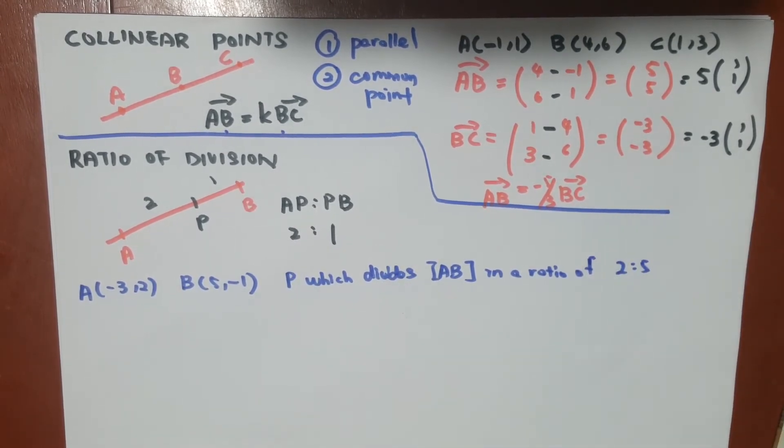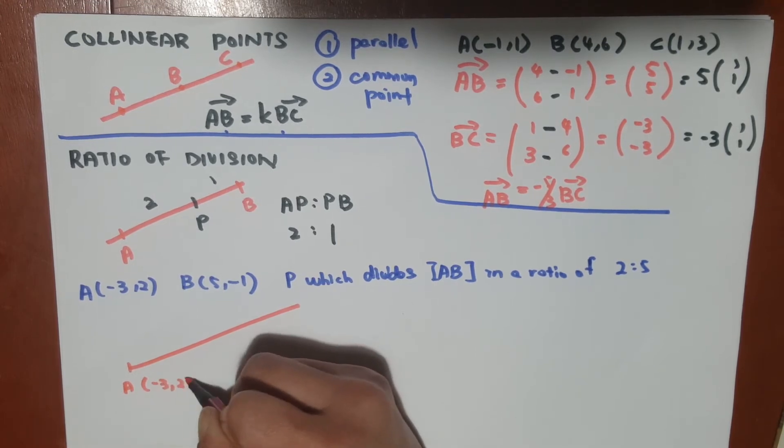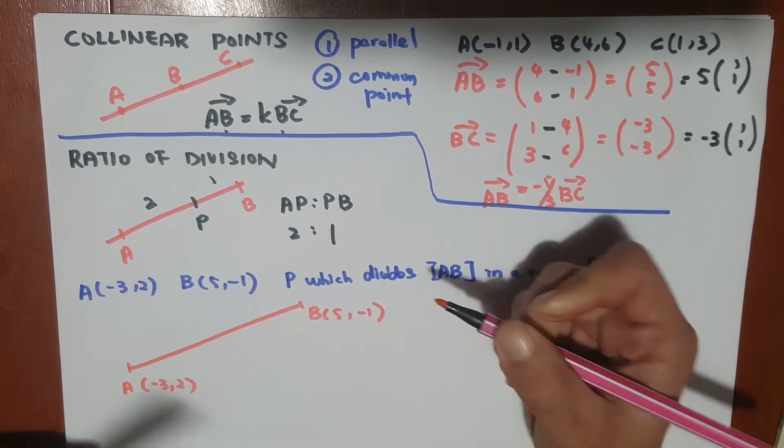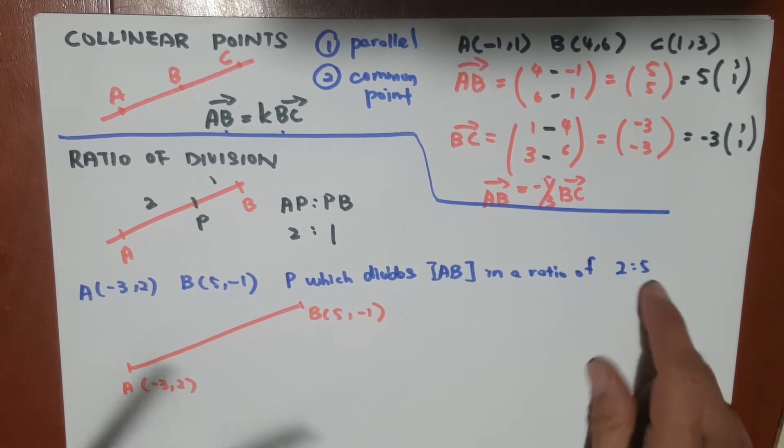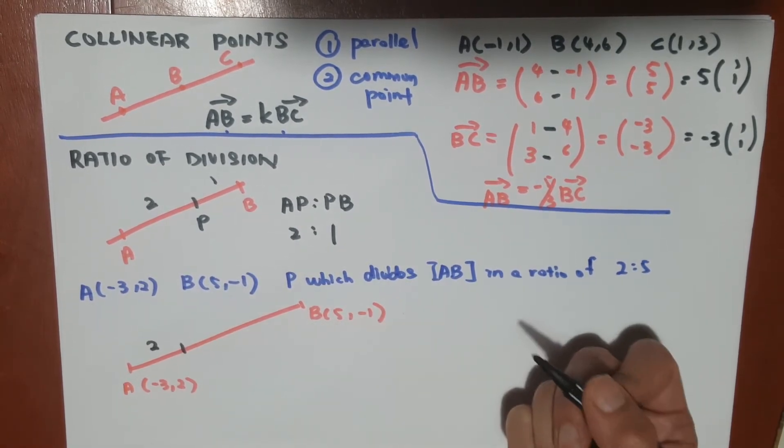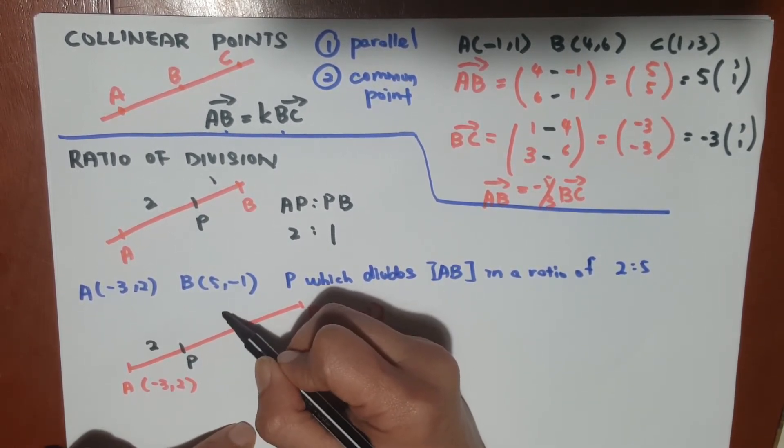We don't really need to draw the Cartesian plane and find out where it is. We know we have a point A, which is (-3, 2), and a point B, which is (5, -1), and we have a point P which divides AB at a ratio of 2:5. It means that AP is shorter because it has length 2. And PB is slightly longer with a unit 5.